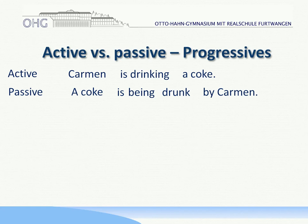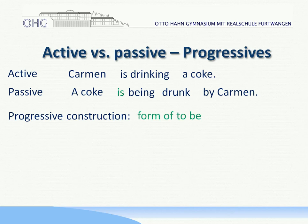Let's analyze the verb construction here. A form of to be — in this case 'is', because it's the present progressive — plus 'being', and always 'being', plus the participle again, as usual in the passive.